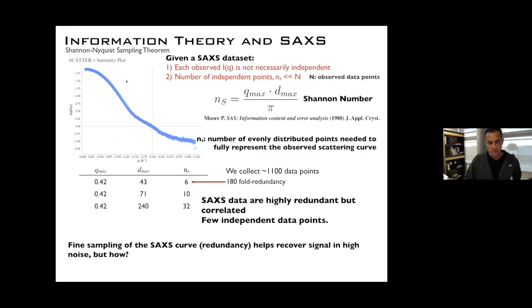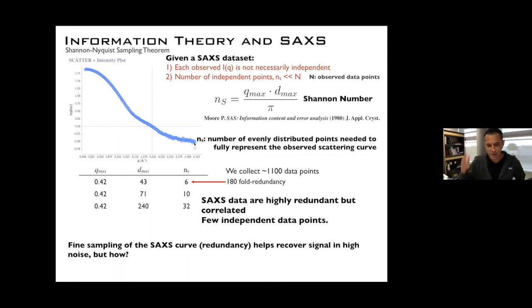That plot informs us whether we should cut the data back and maybe try to do a P(r) distribution over a smaller range rather than transforming the entire dataset. The other thing we do with SAXS is determine the P(r) distribution. Given a SAXS curve going out to about 0.32 Å⁻¹, if you got a new detector like an Eiger and doubled the number of data points with the same q range, do you increase the information? The answer is no.